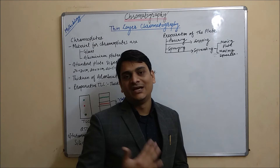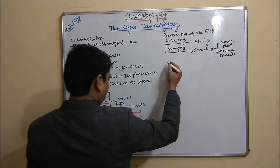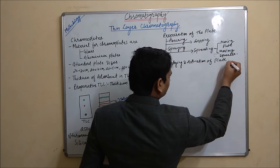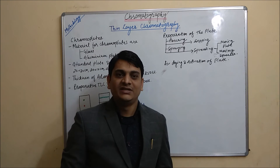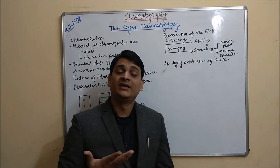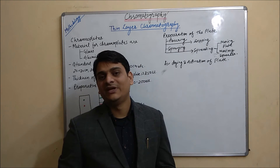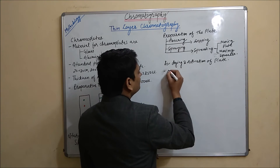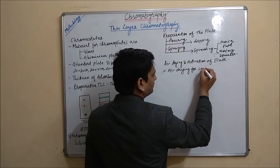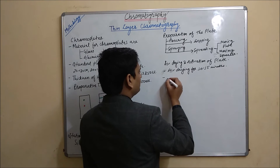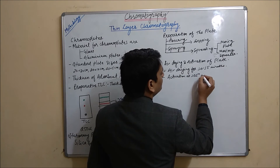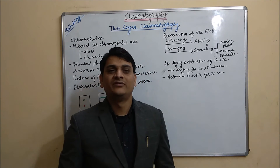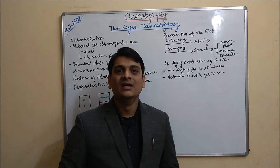The next step of TLC is air drying and activation of the plate. After preparation of the plate, our plate is left for air drying. After air drying, it is activated in a hot air oven at 105 degrees Celsius for 30 minutes to remove any moisture content present in our TLC plate. If we are making our plate by using non-polar or volatile solvents, then this activation is not required.